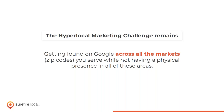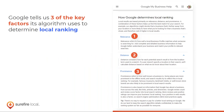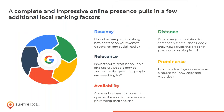There are three main local ranking search factors: relevance, distance, and prominence. Relevance means: is this result relevant to what I'm searching for? Distance means: if I'm in Washington DC, I don't want results from Boston. Prominence relates to how authoritative your website is, how long it's been around, and whether it has the information people need.